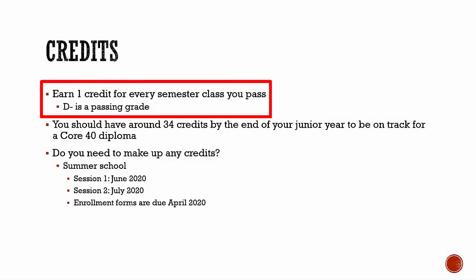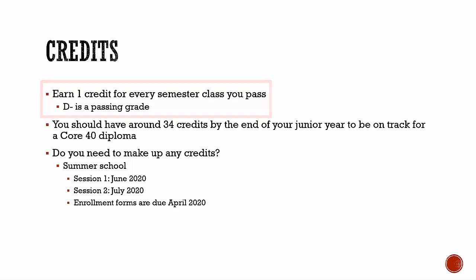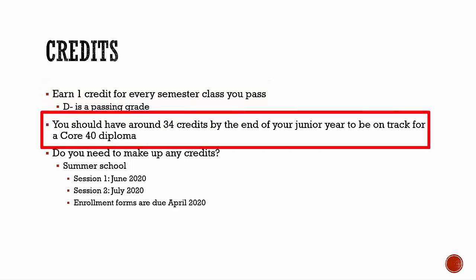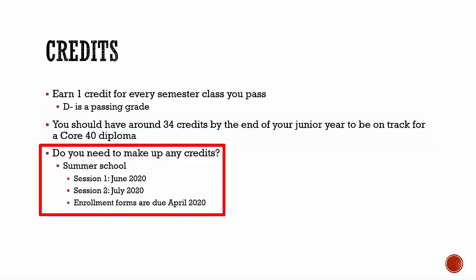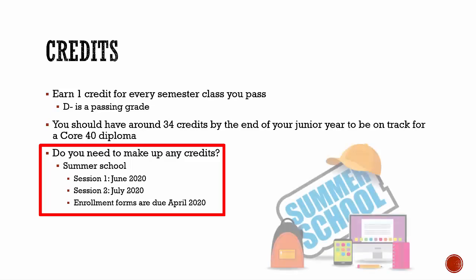You earn one credit for every semester class you pass. A grade of a D minus, which is 60% or higher, is a passing grade and earns you a credit. You should have around 34 credits by the end of your junior year to be on track for a Core 40 diploma. If you need to make up credits to get back on track for graduation, we recommend you take classes during summer school.